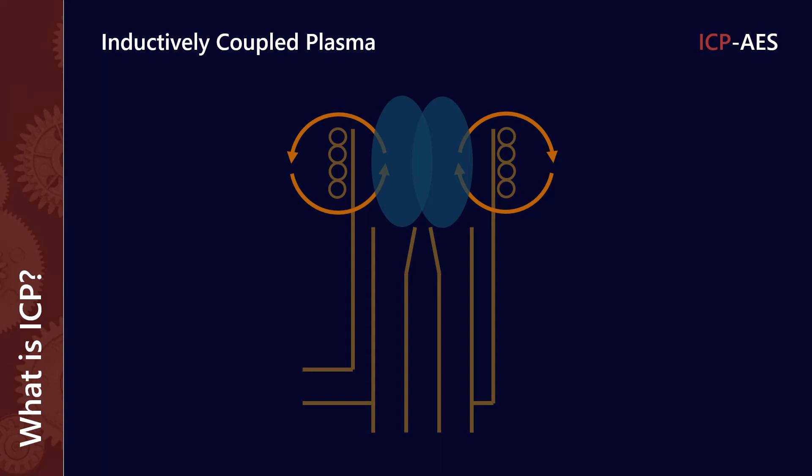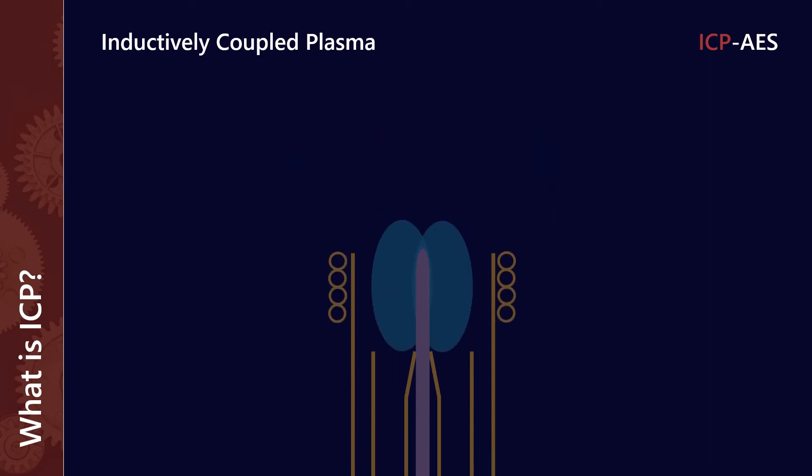What we then do is we inject the sample, and the sample has been aerosolized, so it's atomized, and we spray it through this argon cloud. What that's going to do is enable the sample to get into contact with the extremely high temperatures of the plasma, but argon gas is not going to interact with that sample too much, and it gives us a really good bright flame. So that's what the inductively coupled plasma part of ICPAES really means.